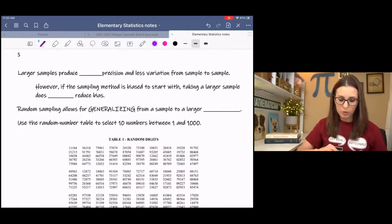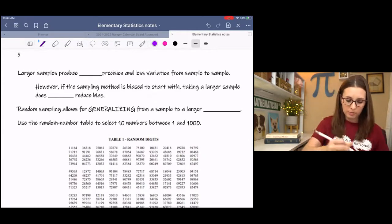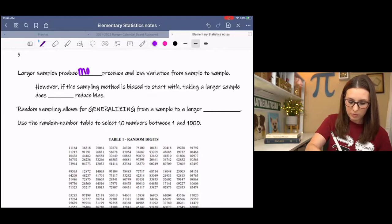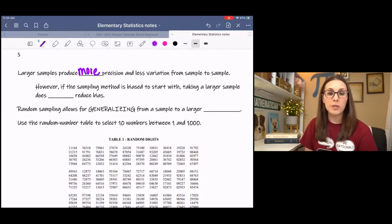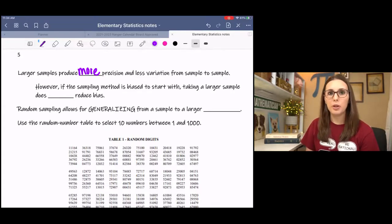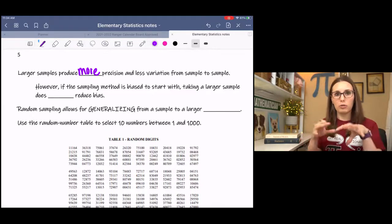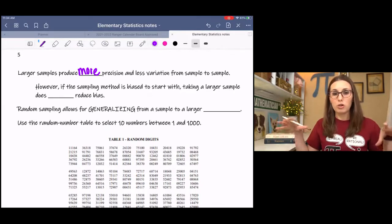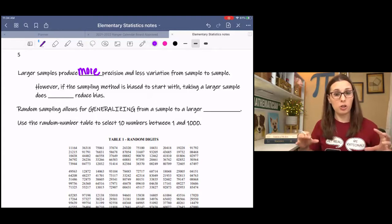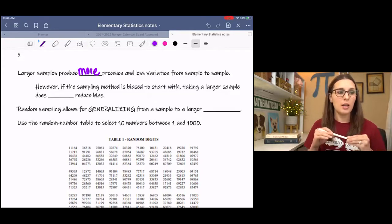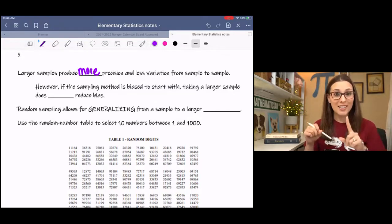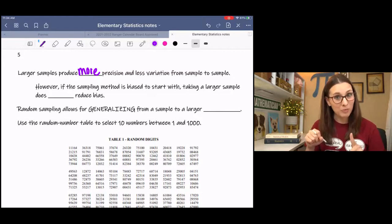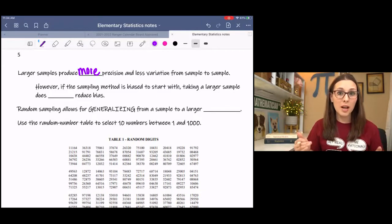Larger samples produce more precision and less variation from sample to sample. So, maybe you're going to pull three samples of size 100. If you look at your three different groups, if they're truly random, then they should be pretty similar in nature when we use our descriptive measures. And the larger the sample, as long as it is truly random, the more precise our information is that we get from that sample.